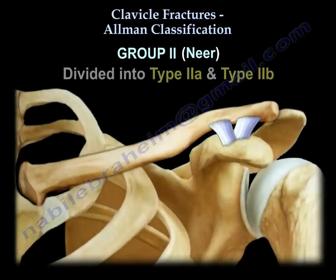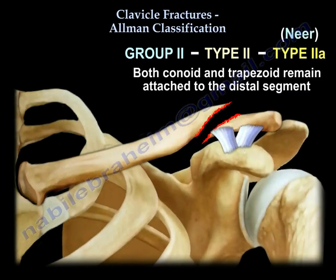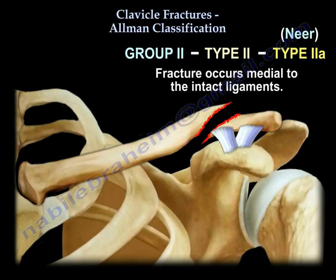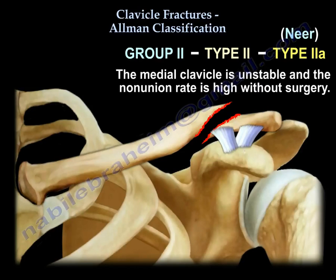Type 2 is divided into Type 2a and Type 2b. In Type 2a, both the conoid and trapezoid ligaments remain attached to the distal segment, so the fracture occurs medial to intact ligaments. The medial clavicle is therefore unstable, and the nonunion rate is high without surgery.